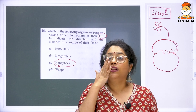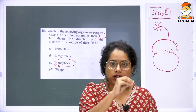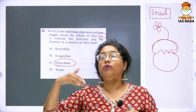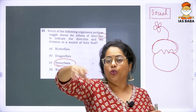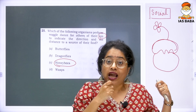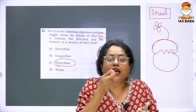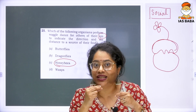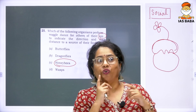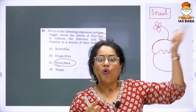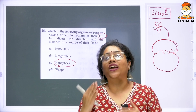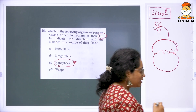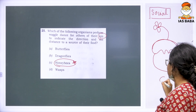Another interesting fact: when a honeybee collects honey from a source, it not only communicates through dance but at times also regurgitates part of the honey for the other bees to taste, so they can confirm the food is good and then go collect it. It is that kind of an evolved species, and the answer to this question is honeybees — option C.